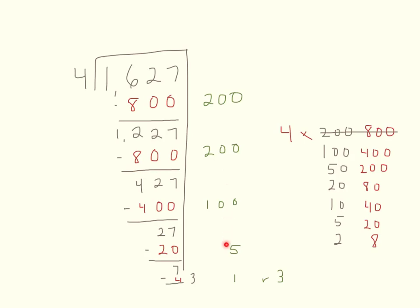Now I need to add up all the partial quotients: 200 plus 200 is 400, plus 100 is 500, plus 5 is 505, plus 1 is 506. So the answer is 506 remainder 3. That's a glimpse of partial quotient division — I'll show you the traditional method in another video.